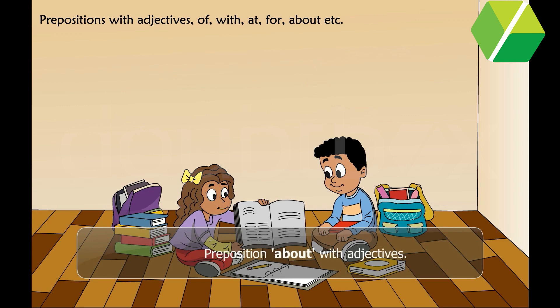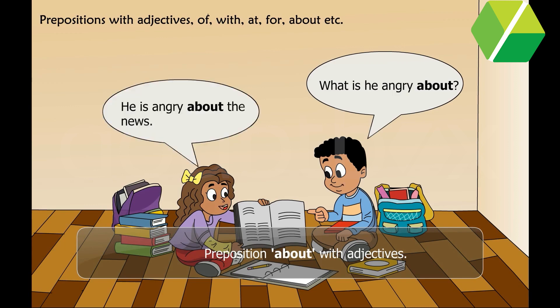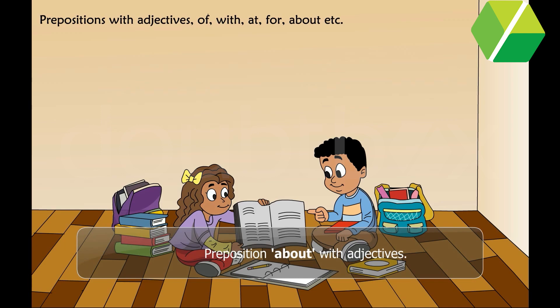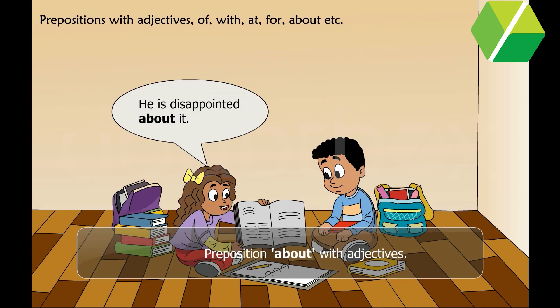Preposition about, with adjectives. What is he angry about? He is angry about the news. What is he disappointed about? He is disappointed about it.